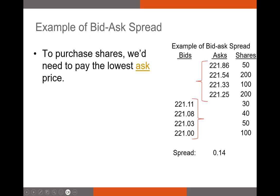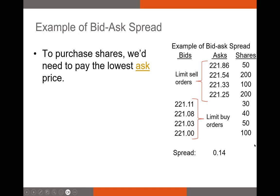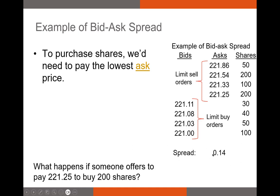In this example, we're looking at bids submitted by investors using limit buy orders and limit sell orders — orders where you put in a specified bid price or asking price. The first column represents open buy orders, where an investor has offered to buy shares for no more than a specific bid price. The second column has limit sell orders, where investors specify the minimum they're willing to sell for — for example, this investor is willing to sell 200 shares for no less than $221.25 per share. The difference between the lowest asking price and the highest bid price is our bid-ask spread — in this case, it's 14 cents.